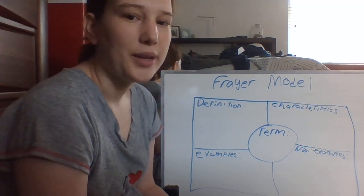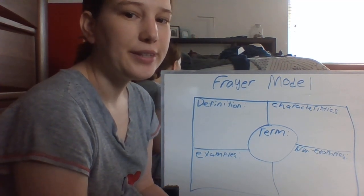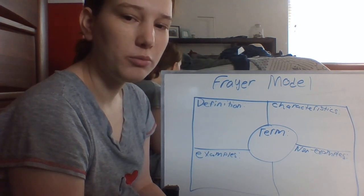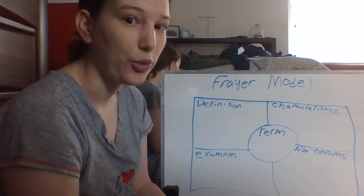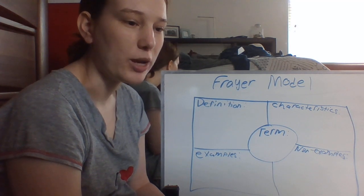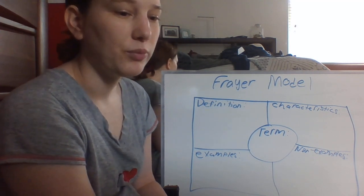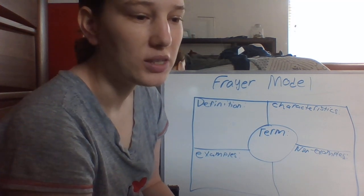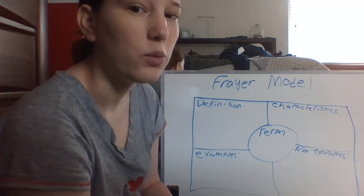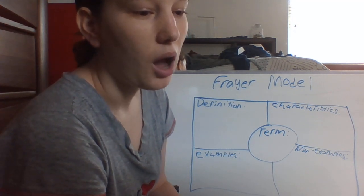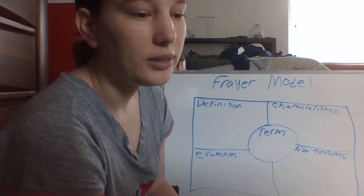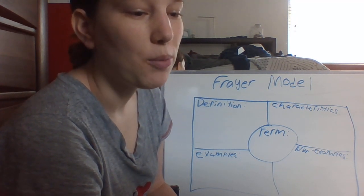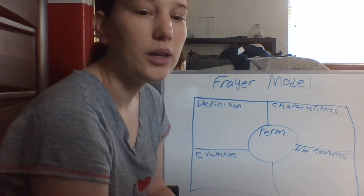Hello, this is Amanda Fernandez. This is part two for the exam three question. We're going to be answering the second question, which on the study guide would be question six. The question is asking: what is the Frayer model of vocabulary instruction?